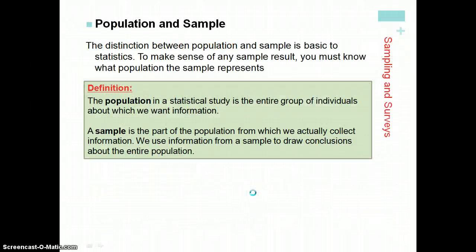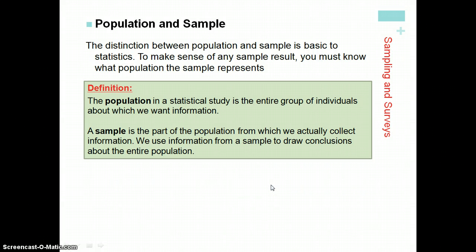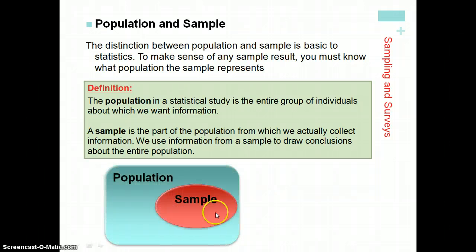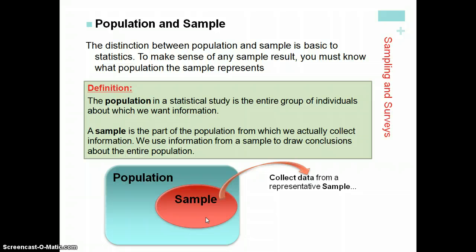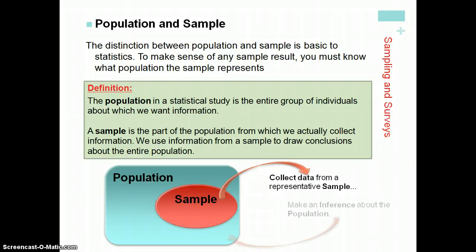Let's start with population and sample. Population is the entire group that you're interested in, and the sample is just basically a subset of that group — a smaller portion. We collect data from a representative sample and use that to make an inference about the population. For example, maybe we want to know what percentage of voters are in favor of President Obama in terms of his approval rating.